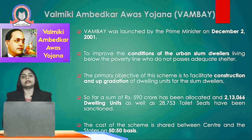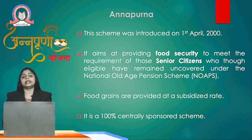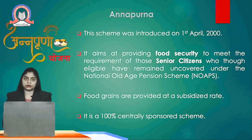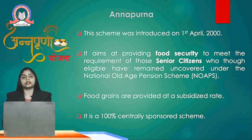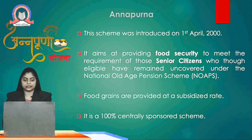The cost under Valmiki Ambedkar Awas Yojana is shared in the ratio of 50:50, with 50% sponsored by the central government and 50% by the state government. The next scheme related to providing food subsidy is Annapurna. This scheme was introduced on 1st April 2000. The main aim is to provide food security especially to senior citizens who are eligible but uncovered under the National Old Age Pension Scheme, providing food grains at subsidized rates. It is 100% sponsored by the central government.